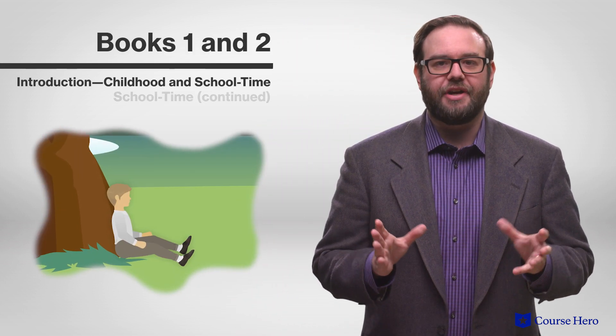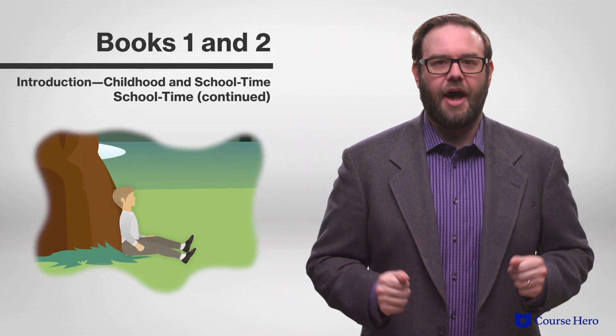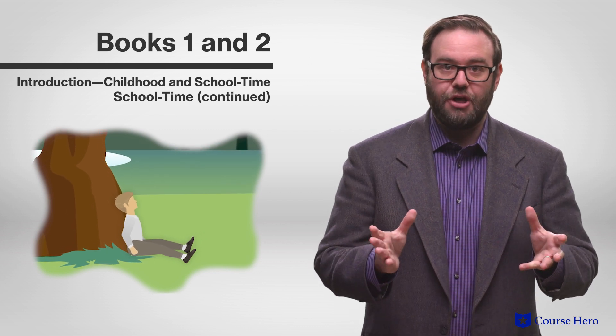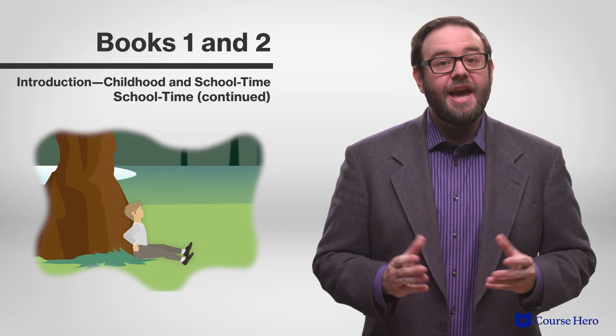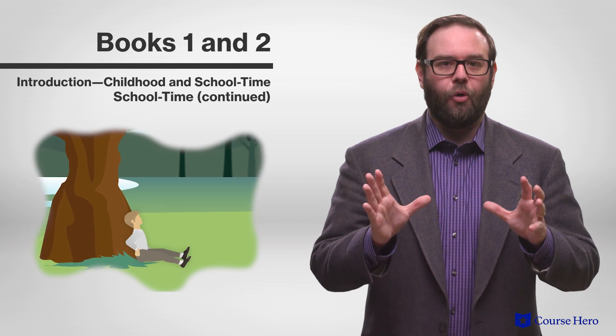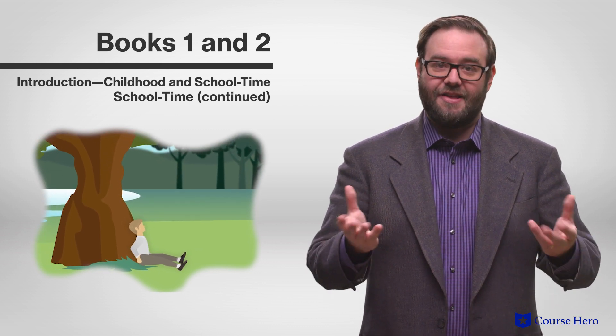Books one and two, titled Introduction, Childhood and School Time and School Time Continued, focus on the poet's childhood and youth. He describes how he came to understand nature more and more and to rely on it in his imagination.